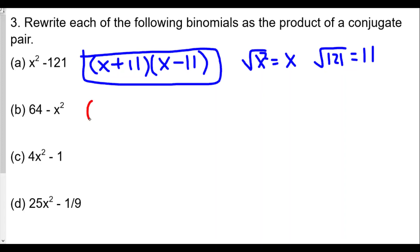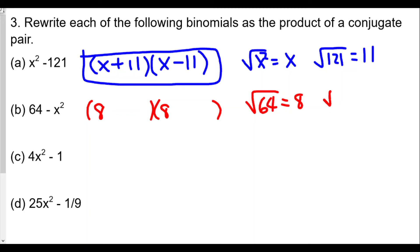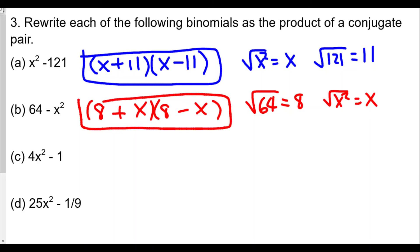For part (b), 64 − x²: we take √64 = 8 (the first number from left to right) and √(x²) = x. However, the order does matter — the first term in each binomial must match the original order. So the answer is (8 + x)(8 − x), not (x + 8)(x − 8).